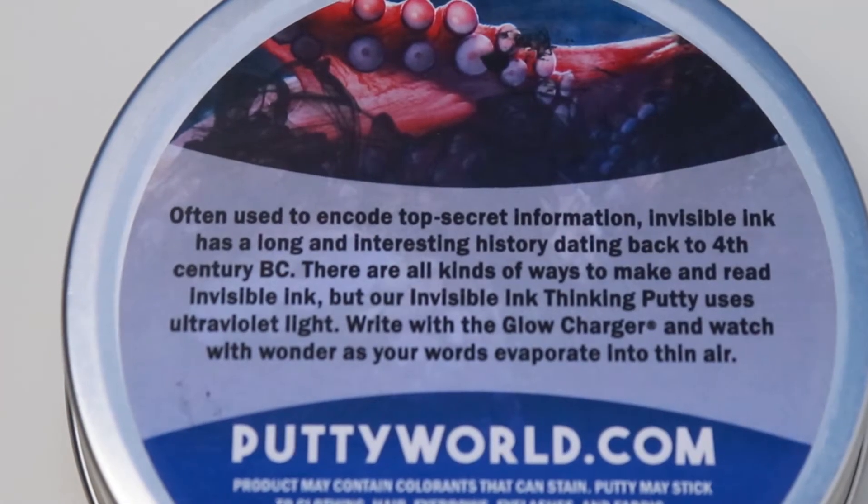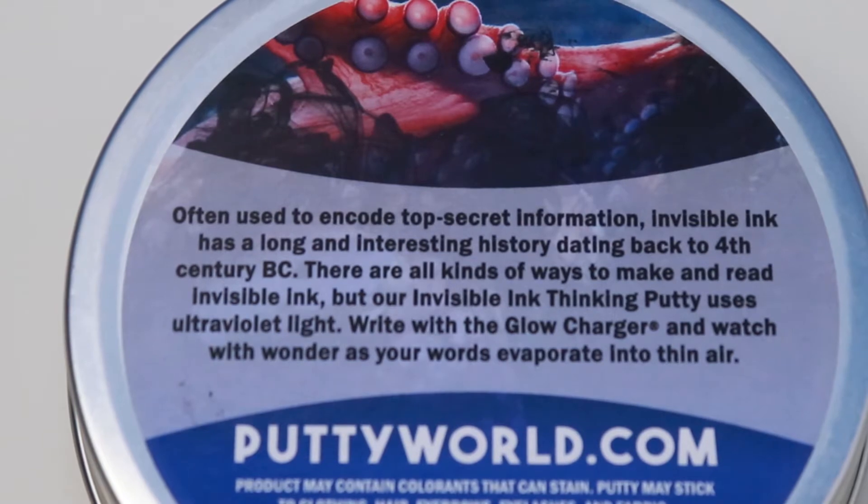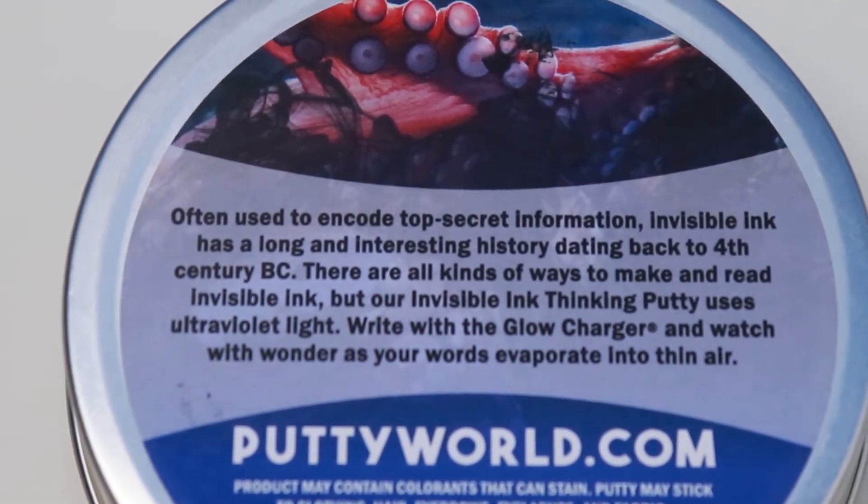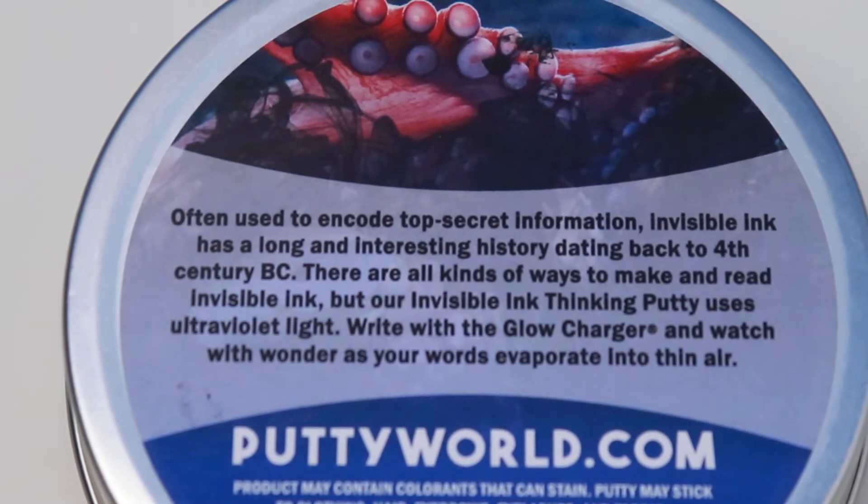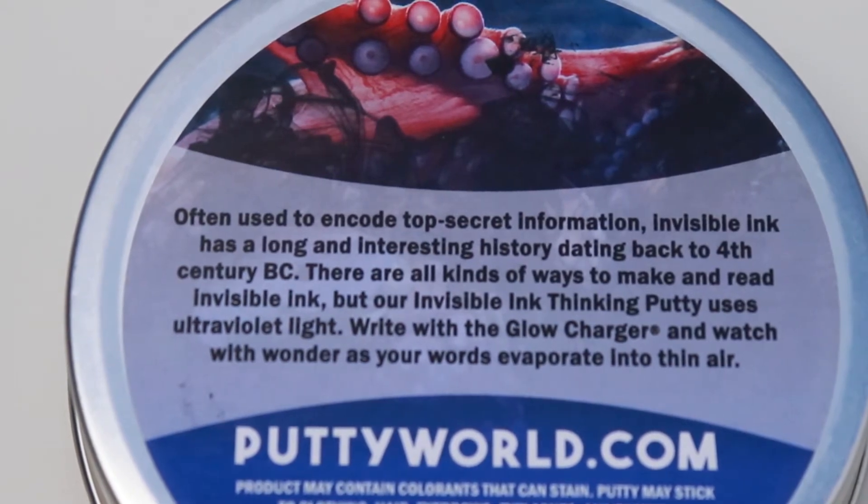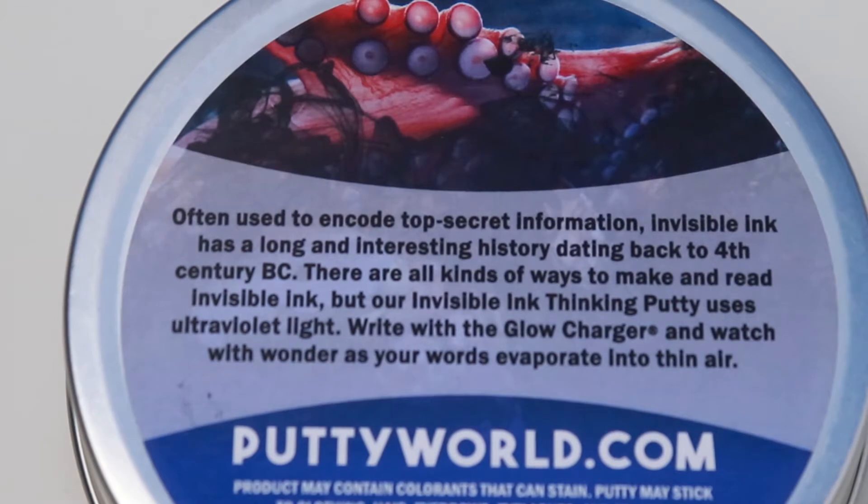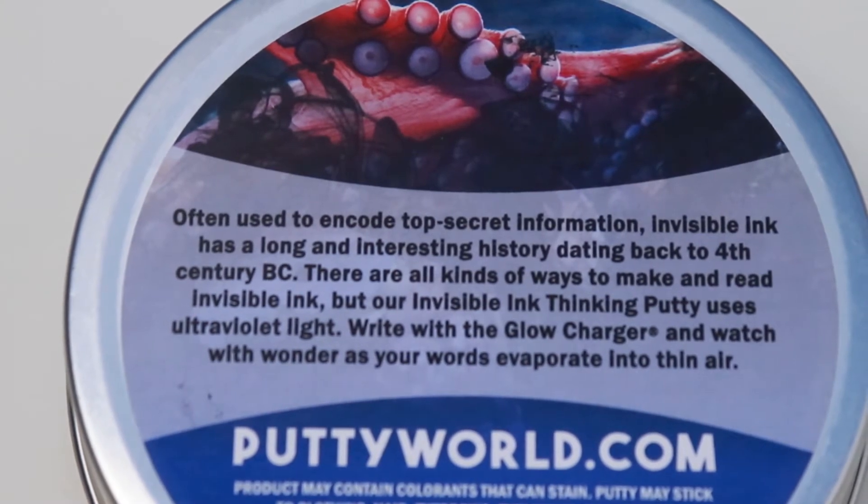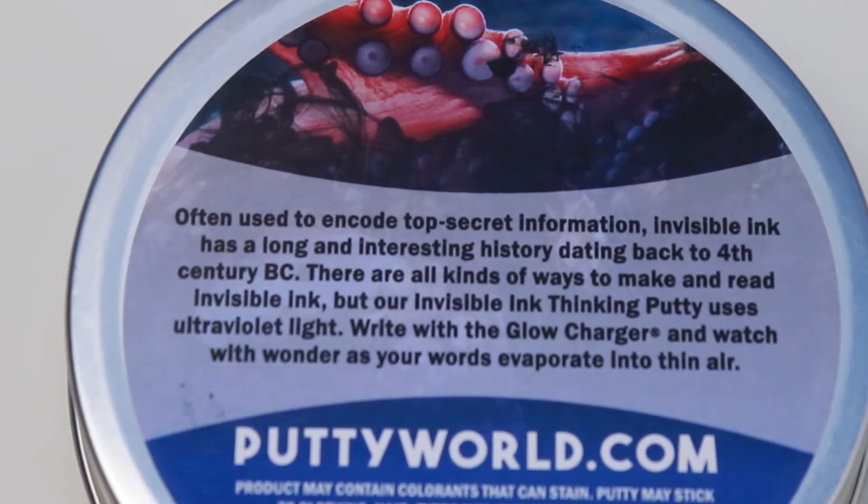Often used to encode top secret information, invisible ink has a long and interesting history dating back to 4th century BC. There are all kinds of ways to make and read invisible ink, but our Invisible Ink Thinking Putty uses ultraviolet light. Write with the glow charger and watch with wonder as your words evaporate into thin air.